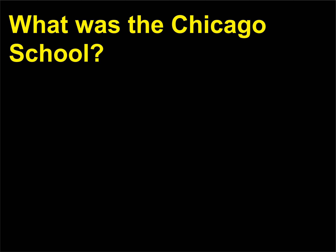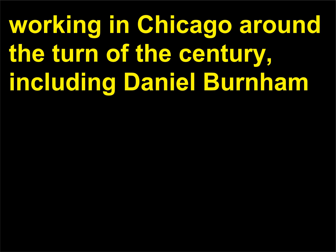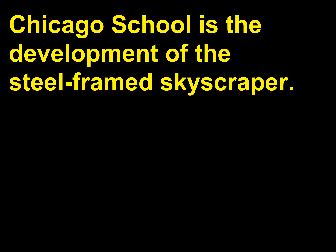What was the Chicago School? The Chicago School is a name given to a group of architects and designers working in Chicago around the turn of the century, including Daniel Burnham (1846–1912), William L. E. Baron Jenney (1832–1907), and Louis Sullivan (1856–1924). One of the greatest engineering innovations associated with the Chicago School is the development of the steel-framed skyscraper.